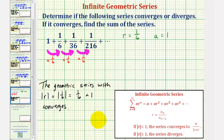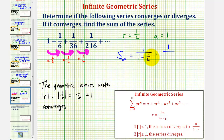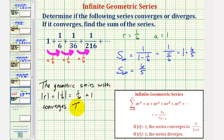Now we'll find what it converges to — the infinite sum — which would be A divided by (1 minus R): that's 1 divided by (1 minus 1/6), or 1 divided by 5/6. Dividing by 5/6 is equivalent to multiplying by the reciprocal 6/5, so the infinite sum equals 6/5.